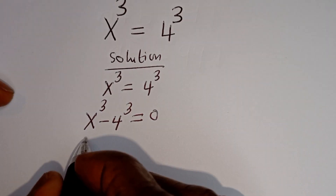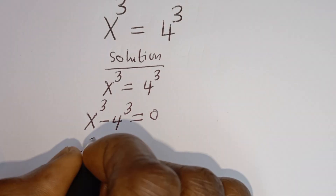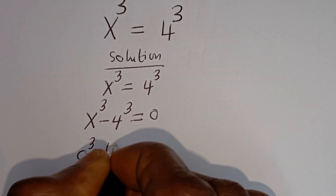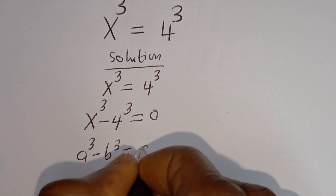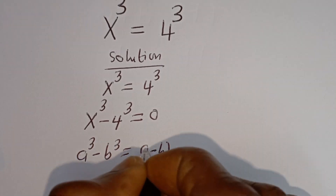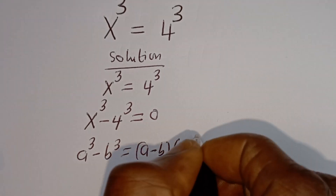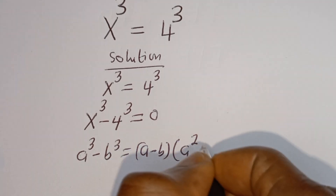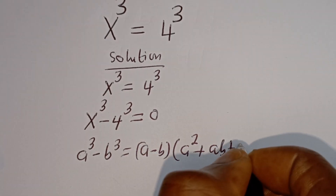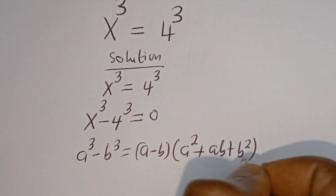Now take note of this: if you have a to the power of 3 minus b to the power of 3, this is equal to a minus b, bracket, a squared plus ab plus b squared.